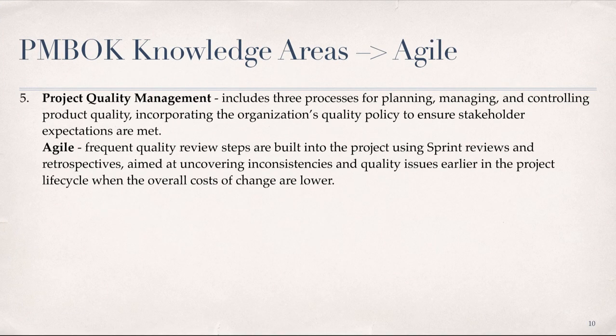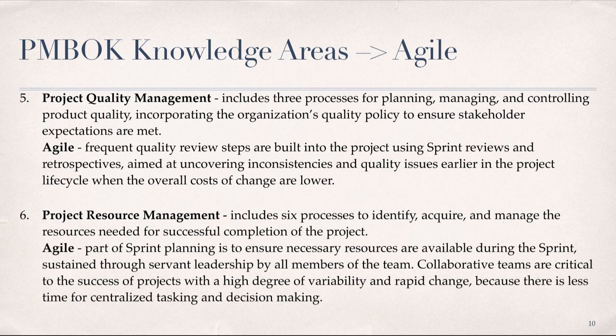Project Quality Management includes three processes for planning, managing, and controlling product quality, incorporating the organization's quality policy to ensure stakeholder expectations are met. In Agile, frequent quality review steps are built into the project using sprint reviews and retrospectives aimed at uncovering inconsistencies and quality issues earlier in the project life cycle, when the overall costs of change are lower. Project Resource Management includes six processes to identify, acquire, and manage the resources needed for successful project completion. In Agile, sprint planning ensures necessary resources are available and sustained through servant leadership by all team members. Collaborative teams are critical to success in projects with high variability and rapid change, as there is less time for centralized tasking and decision-making.